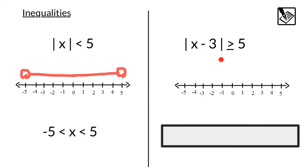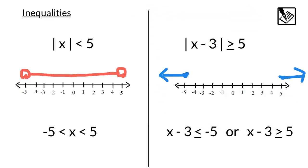For greater than inequalities, like absolute value of x minus 3 is greater than or equal to 5, this means it's more than 5 spaces away. Counting spaces from 0, it's going to be greater than or equal to 5 spaces away to the left, and greater than or equal to 5 spaces away to the right as well. So whenever we have greater than inequalities with absolute values, we get x minus 3 is less than or equal to negative 5, or x minus 3 is greater than or equal to 5.